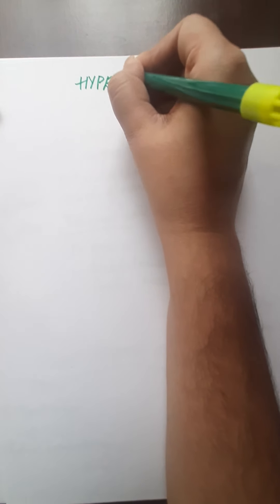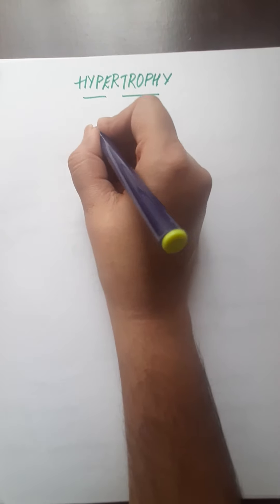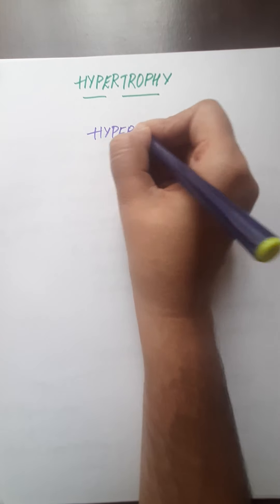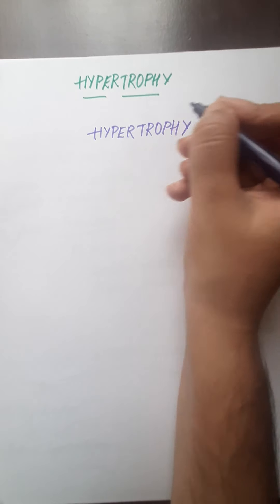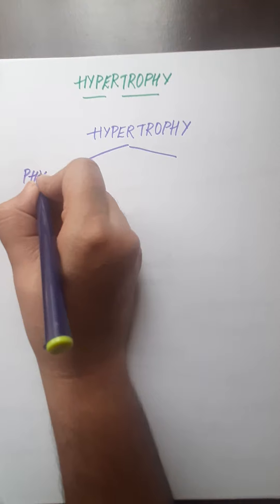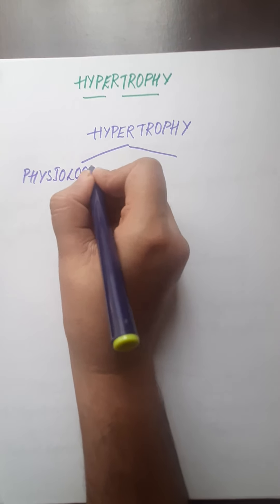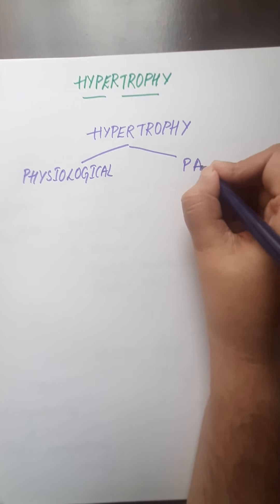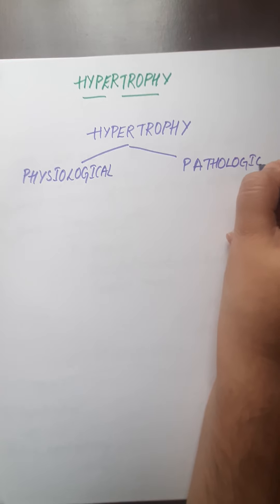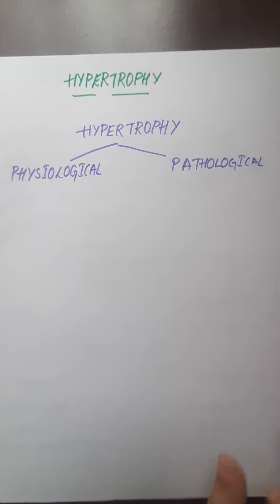Hypertrophy — 'hyper' means increase and 'trophy' means size, so increase in size of the cells is taking place, resulting in increase in growth and thus the increase in the size of the cells. Hypertrophy is again divided into physiological hypertrophy and pathological hypertrophy. Physiological hypertrophy is taking place in physiological, that is normal, conditions, whereas pathological hypertrophy is taking place in pathological, that is abnormal, conditions.